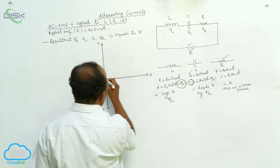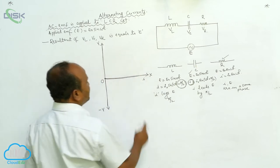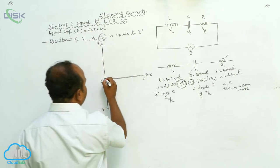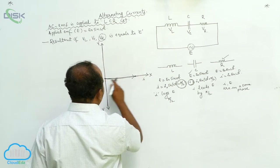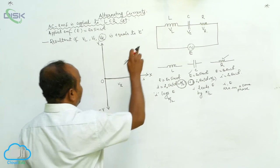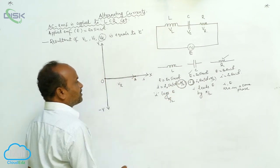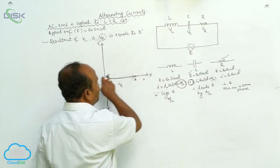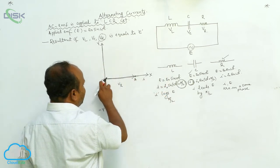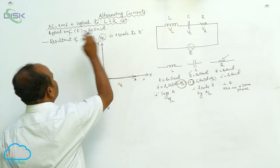The current is represented along the x-axis. The voltage across the resistance, Vr, is represented along the same direction. Therefore, Oa represents Vr — the voltage across the resistance. In the case of the resistor, voltage and current are both under the same phase, so if the voltage is represented by Oa, that is Vr across the resistance.